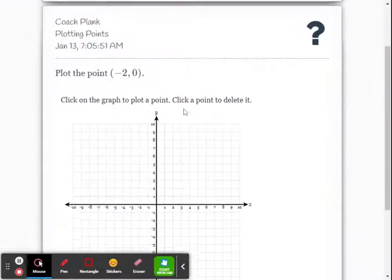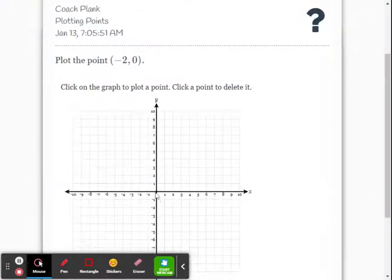So let's do the next problem. Negative two, zero. Let's say we make a mistake here. Let's say we get our x and y backwards. Instead of going left two and up or down zero, we go down two by accident. Classic mistake.